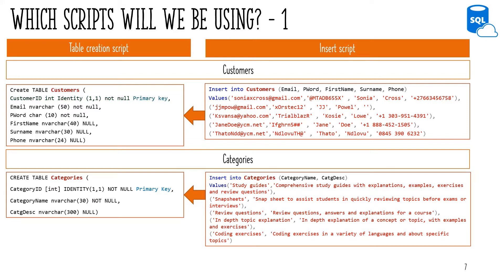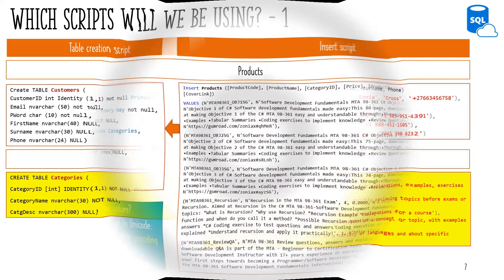Category ID is also omitted in the Categories Insert List, as it is also an identity field. All the values we are inserting are going into character fields, so they are enclosed in single quotation marks.